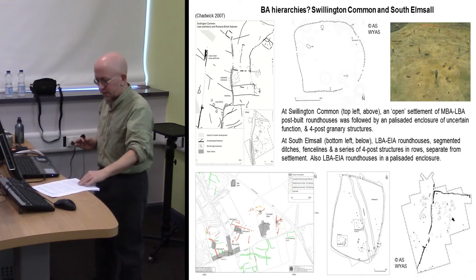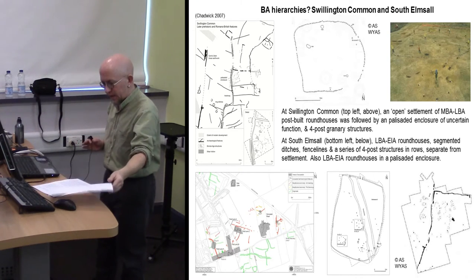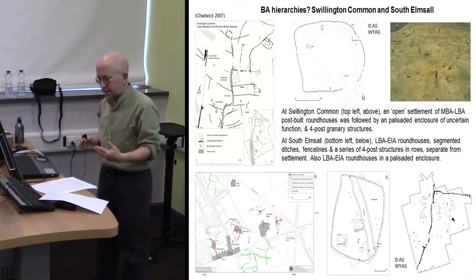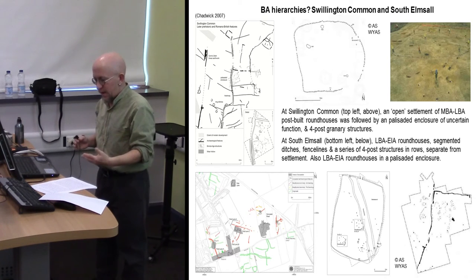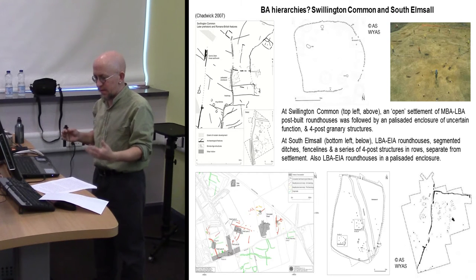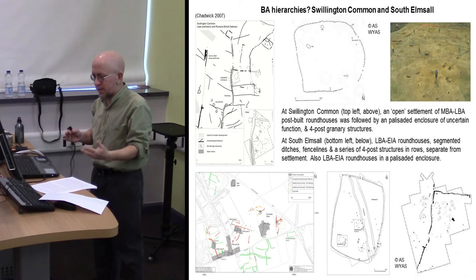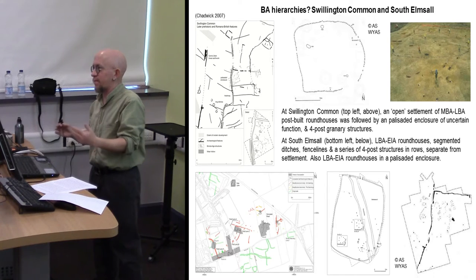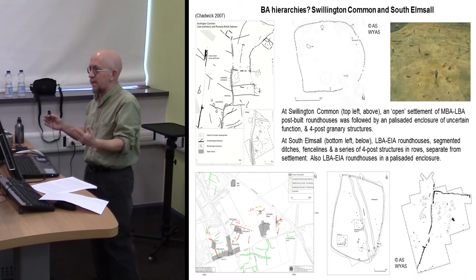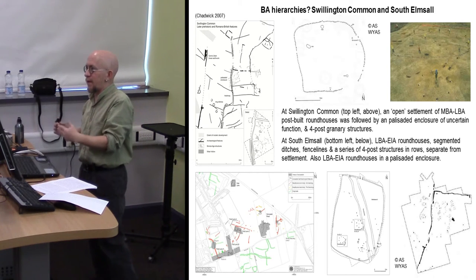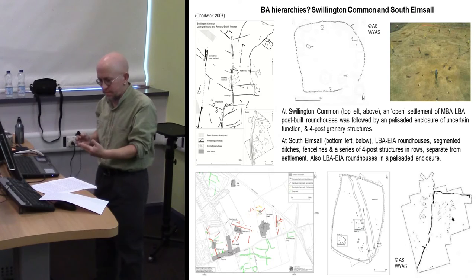There were very few finds from these palisaded structures, and whatever their precise social function, they're certainly rather different to the sort of possible Bronze Age elite centres that people have supposedly identified developing in eastern and southern England.